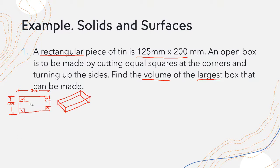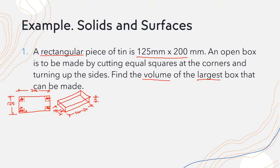The corners are already cut out. The dimension is no longer 125 because we've cut out and turned up the sides — there are two x's cut out, so the width is now 125 minus 2x. Similarly, the length is 200 minus 2x. Since the cut-out squares have dimension x, our height is also x. We've drawn our figure and can proceed to the next step.